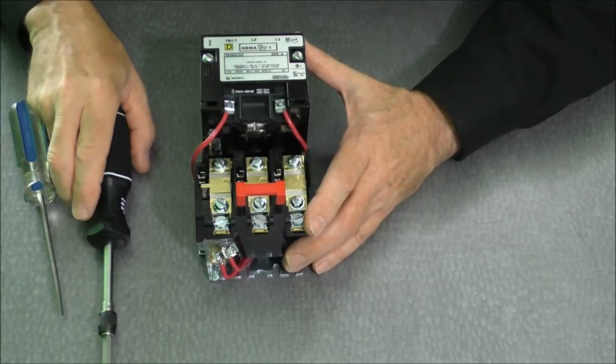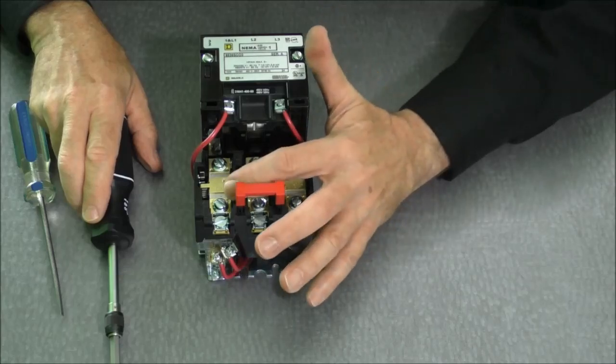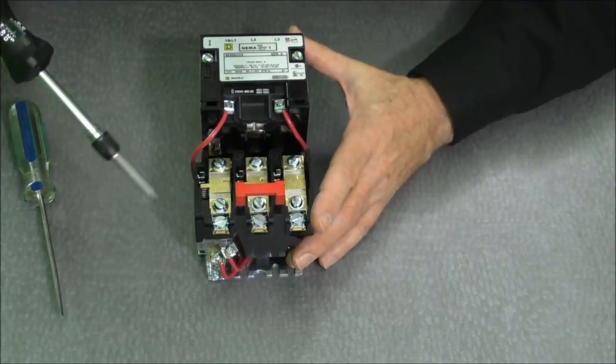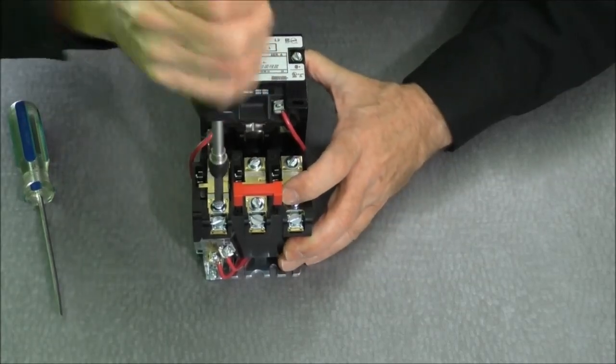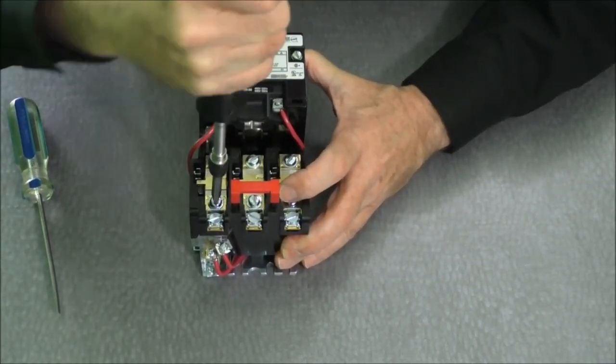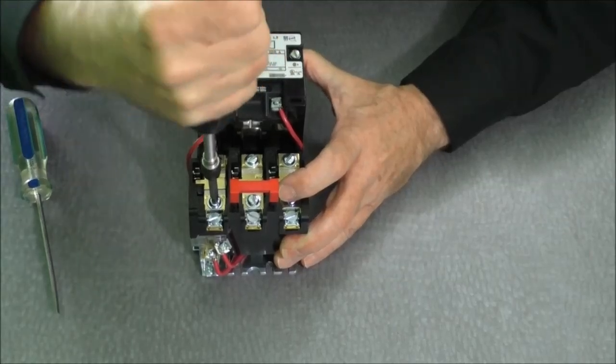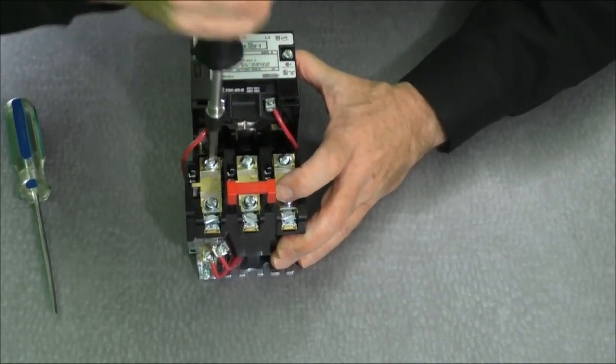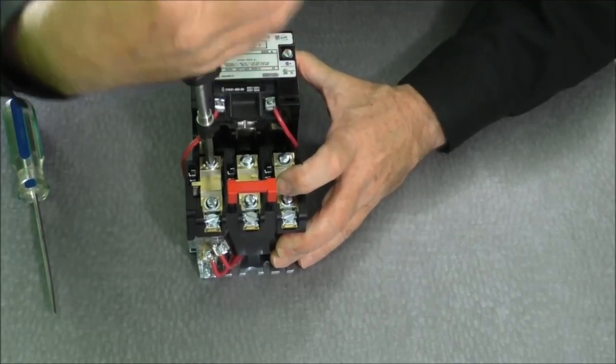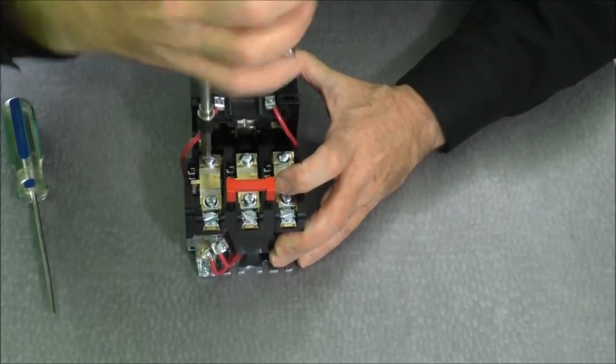Each screw on this starter has an appropriate torque setting. The fasteners for the thermal element is 9 to 16 inch-pound. So I'm torquing that. I will tighten it until you hear the torque driver ratchet. When it begins to ratchet, we know it's tightened to the appropriate torque setting.